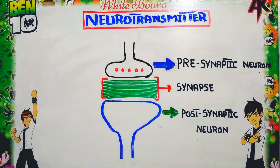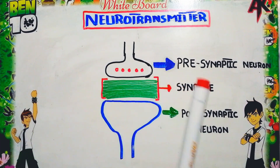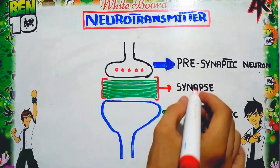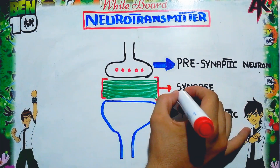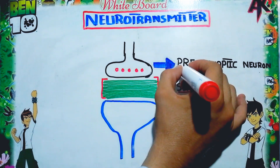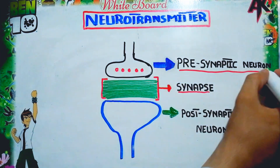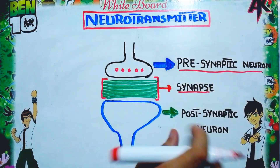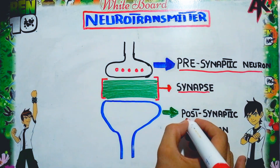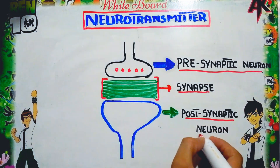We have two types of neurons relative to the synapse. The neuron present before the synapse is called the presynaptic neuron, while the neuron present after the synapse is called the postsynaptic neuron.